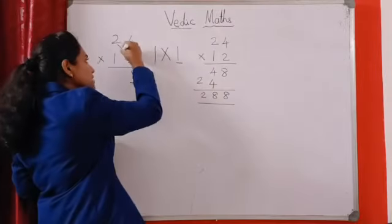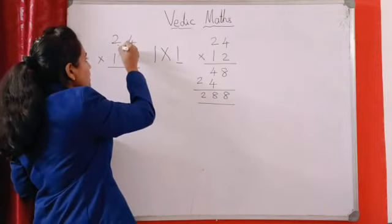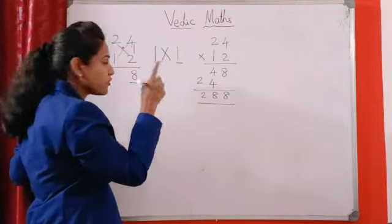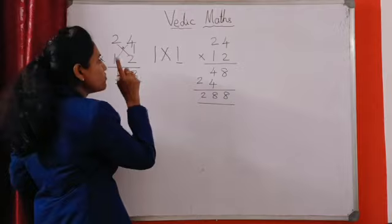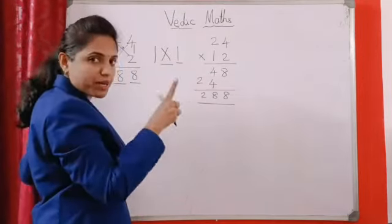The next X, X means cross multiplication, then you should add. 2 twos are 4 plus 4 ones are 4, 4 plus 4, 8. So here also 1 digit number. I also 1 digit number, X also 1 digit number.